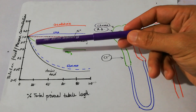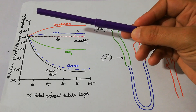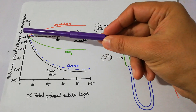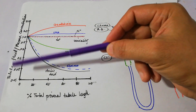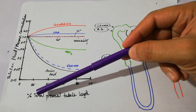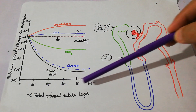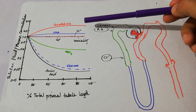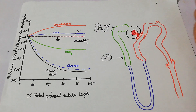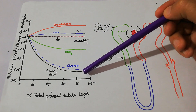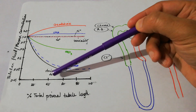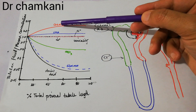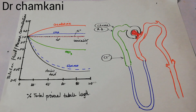This is shown with the help of a graph. The graph shows the tubular fluid to plasma concentration ratio along the y-axis, and the proximal tubule length along the x-axis. Different curves have been drawn for different solutes — the lowermost curve is for amino acids, the blue color is for glucose, green is for bicarbonate, and another curve is for creatinine.